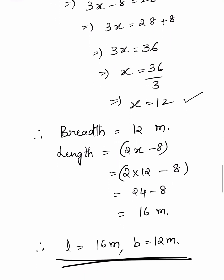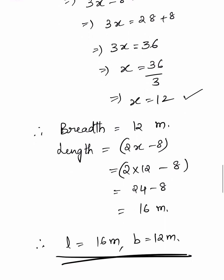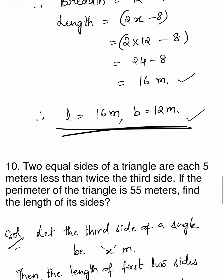We know that breadth is 12 meters. Length equals 2x minus 8, so 2 times 12 minus 8 equals 24 minus 8, which is 16 meters. Therefore, length is 16 meters and breadth is 12 meters.